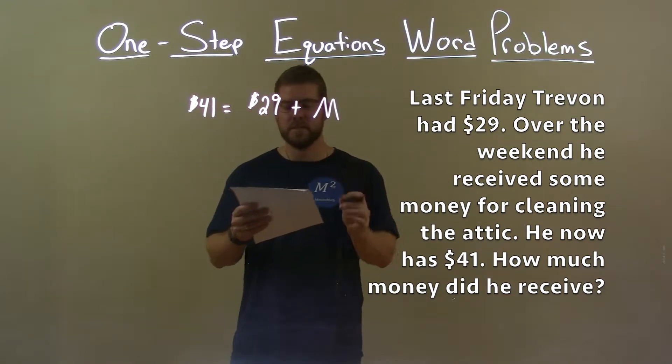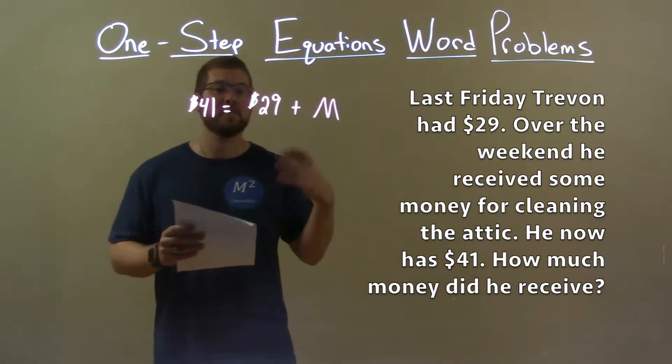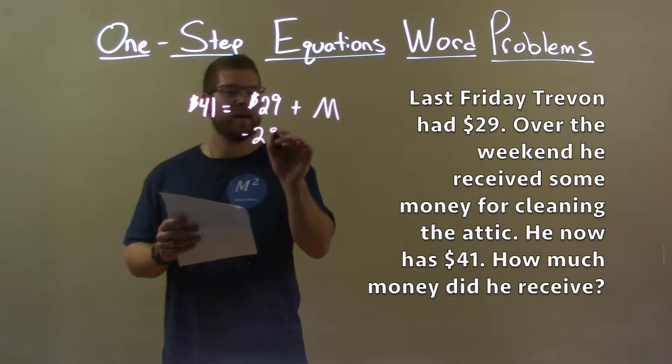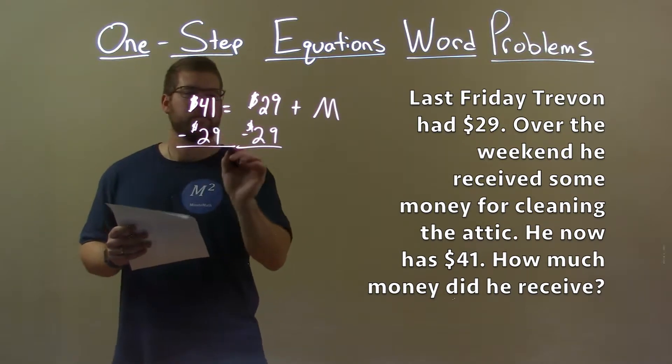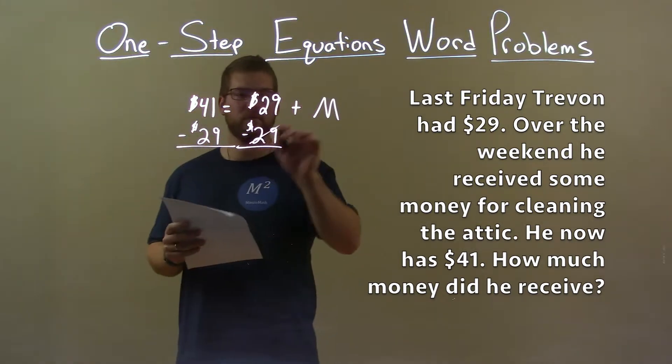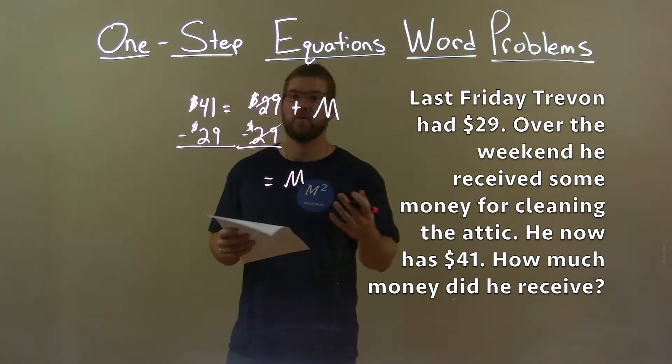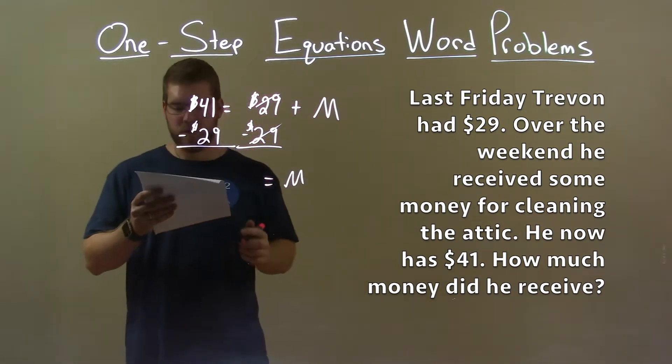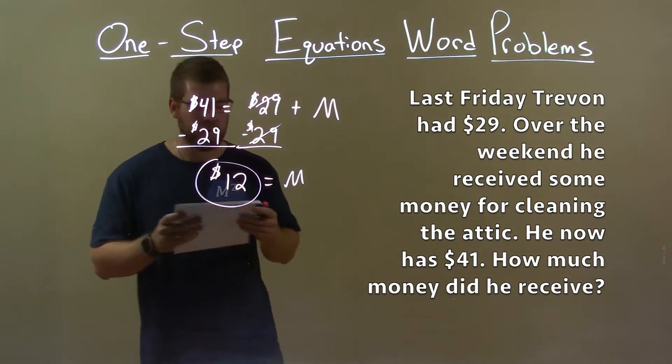Now I want to see how much he received over the weekend. Well, we're adding $29 there, opposite of addition is subtraction. So if I subtract $29 from both sides, this cancels here. M by itself represents the money he made over the weekend. And 41 minus 29 is 12. So he made $12 over the weekend.